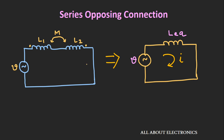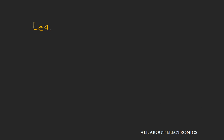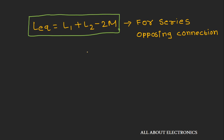Replacing the two inductors by equivalent inductance L_equivalent, we write V equals L_equivalent into di/dt. Comparing these two equations, L_equivalent equals L1 plus L2 minus 2M, which is the expression for mutually coupled inductors connected in a series-opposing connection.